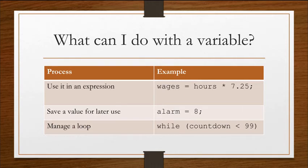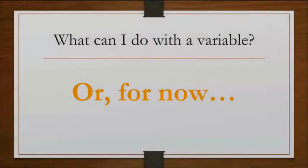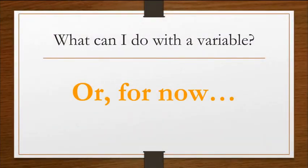So how might you use a variable? Well, you can use it in an expression such as wages equals hours times 7.25, where hours is a variable that we're using in a multiplication. In the next example, we could save a value for later use. For instance, alarm equals 8. Now later in the code, any time I use alarm, it'll equal 8. And you can also use it to manage loops, which will come later.